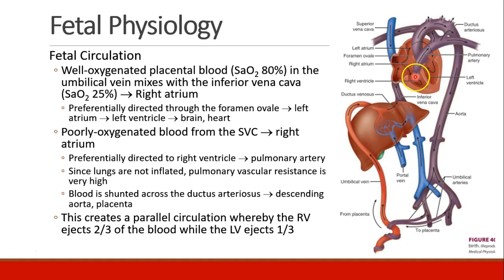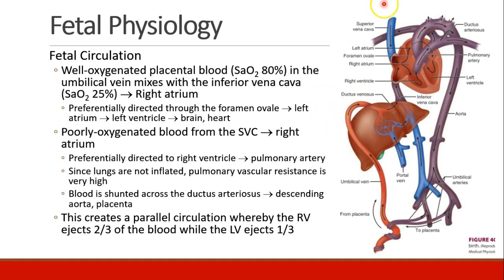From here, instead of following the normal path to the right ventricle and to the lungs, the blood is preferentially directed through the foramen ovale — the hole between the right and left atria. It then goes into the left atrium, the left ventricle, and then out the aorta to the brain and the heart. We don't want blood going through the right ventricle and to the lungs because the lungs don't participate in gas exchange before the fetus is born. Poorly oxygenated blood from the superior vena cava also goes to the right atrium, and due to flow characteristics, this blood tends to go down to the right ventricle, which is the blood that goes to the pulmonary artery.